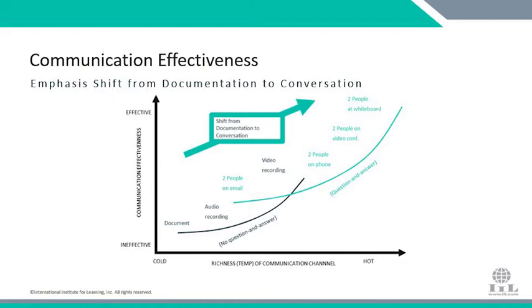When it comes to communication efficacy, we want to shift from documentation to conversation. Looking at a graph of effectiveness versus richness of communication — from cold to hot — the best way is two people at a whiteboard. That may not be possible together right now, but we can do two people on a video conference using a digital whiteboard, which really brings that efficacy up and helps fight remote working problems.